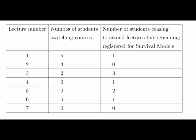Here we are. We've got 7 lectures and we have the number of students switching courses and then the number of students ceasing to attend the lectures but remain registered for the module. So because it's boring. We have one drop out in the first lecture, 3 after the third lecture and so on.